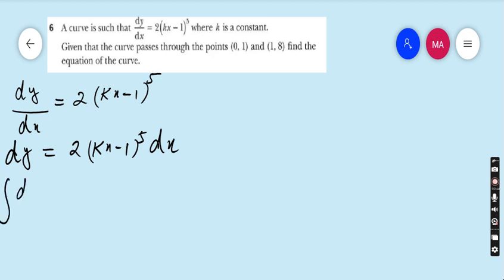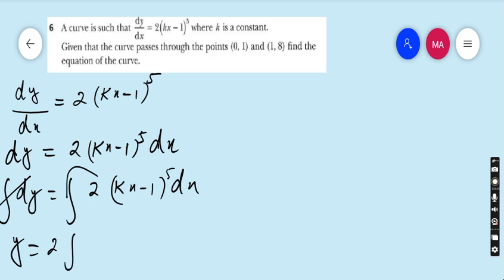So it is integral dy equals integral 2(kx - 1) to the power 5 dx. The integral and differential cancel for y. On the right side, 2 is outside.